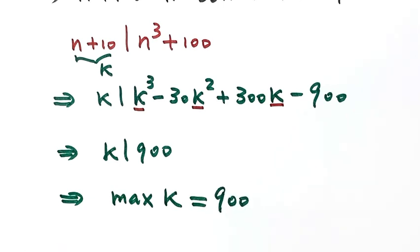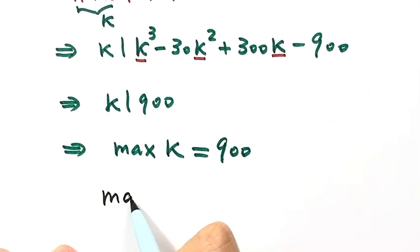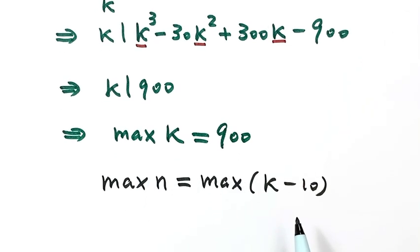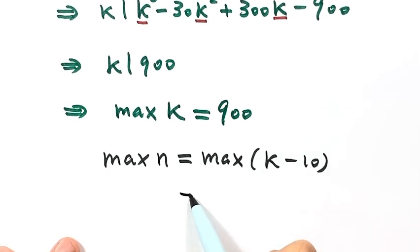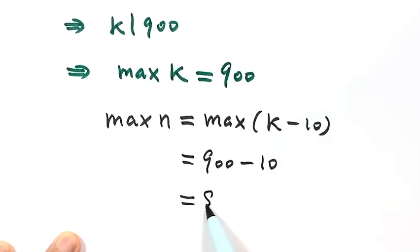Okay, now go back to the original question. Our question is what is the maximum value of n? Because n equals k minus 10, and we just figured out the maximum value of k is 900, so that's 900 minus 10, which is 890. So 890 is the maximum value of n.